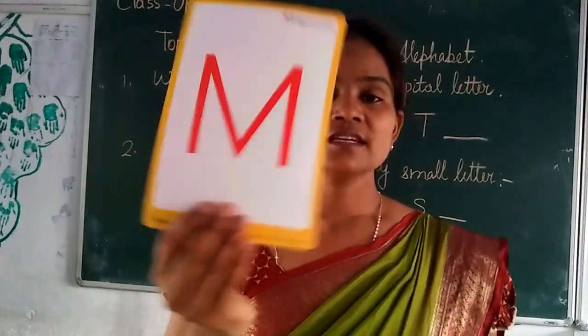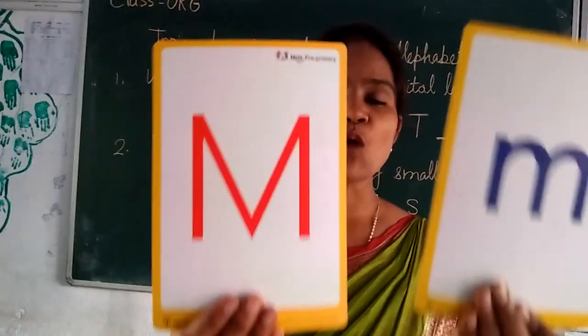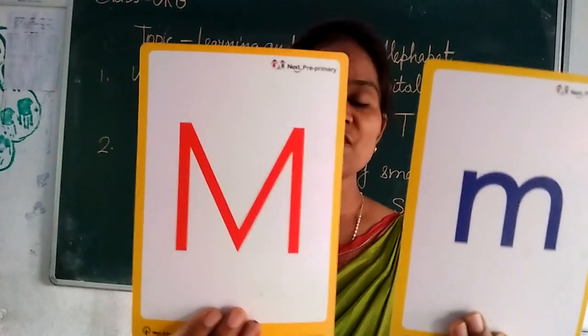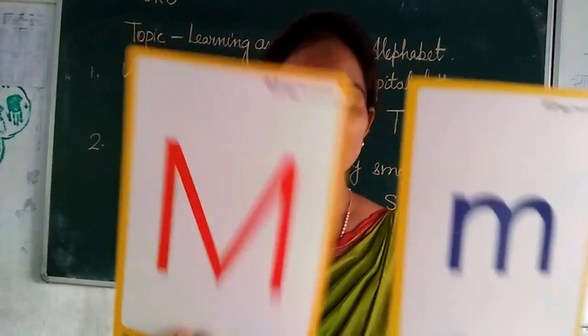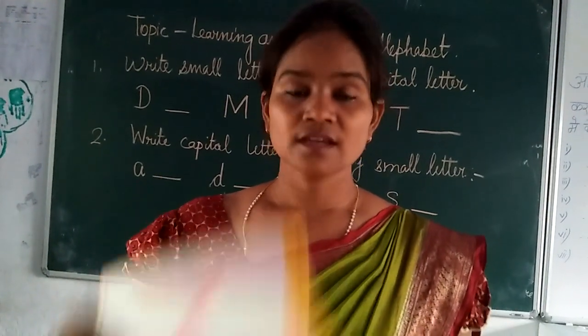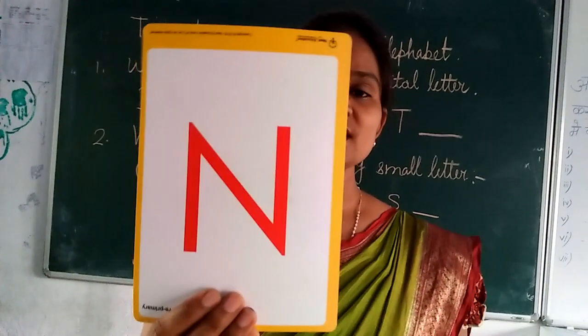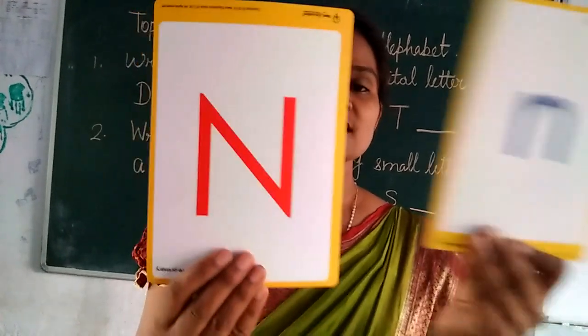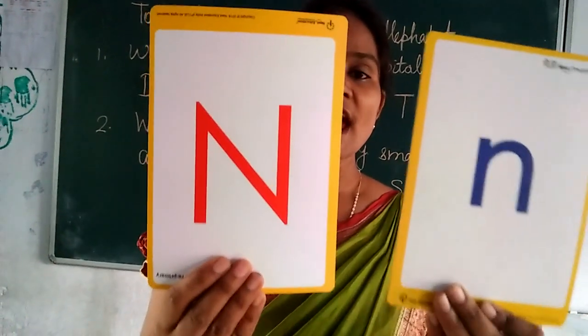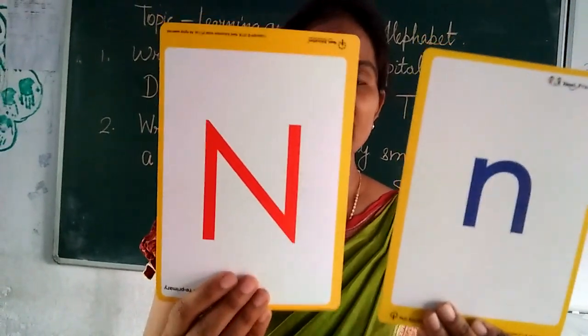Capital M. Small M. M for monkey. Capital N. Small N. N for nest.